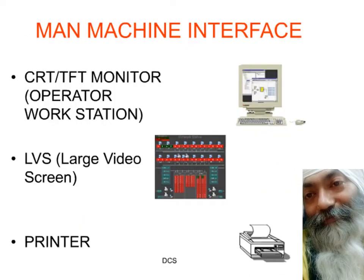We also need a man-machine interface, normally in the form of a monitor. Nowadays we have large-sized video screens, mostly LCD or LED based, along with regular printers. An individual operator can work on a single workstation, and when the plant is very large, multiple operators can look at these screens and work in parallel mode.